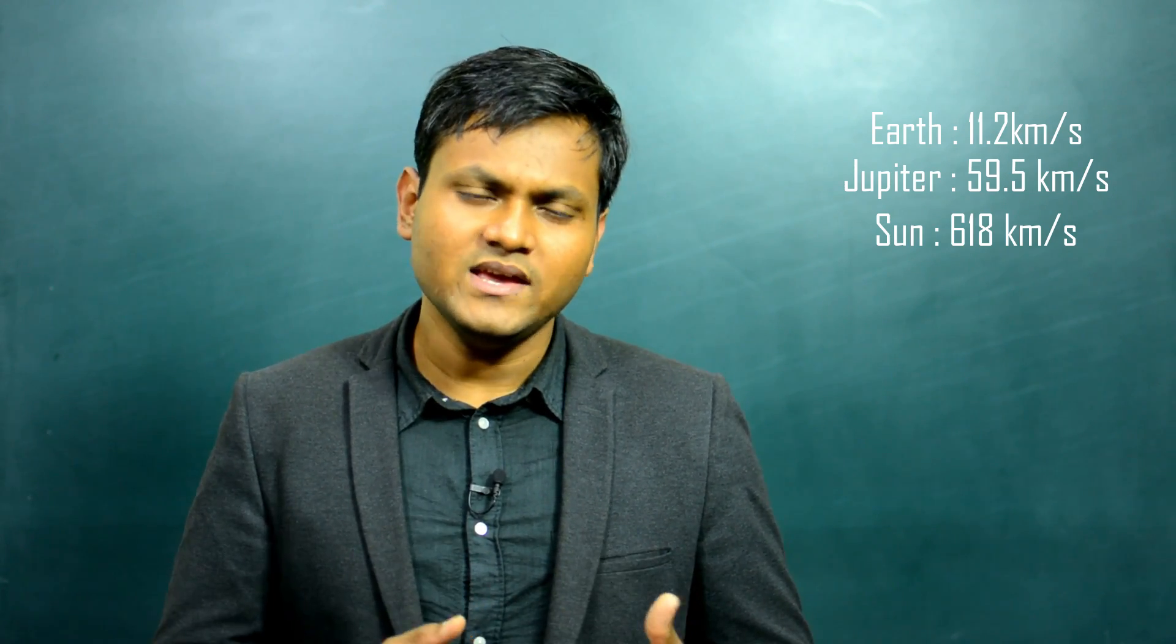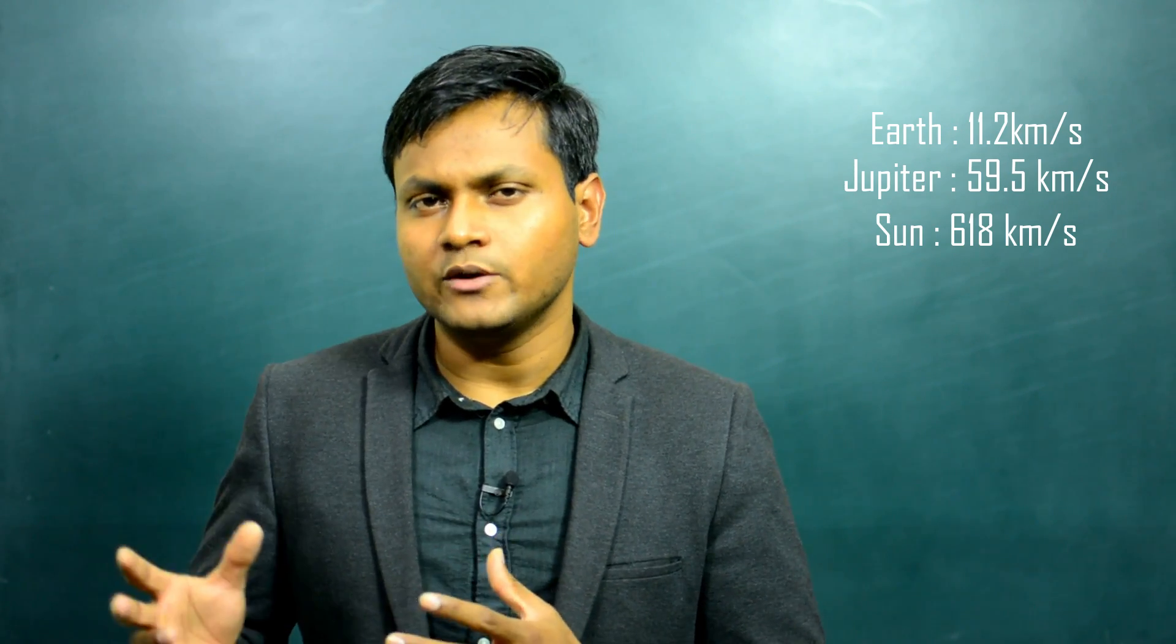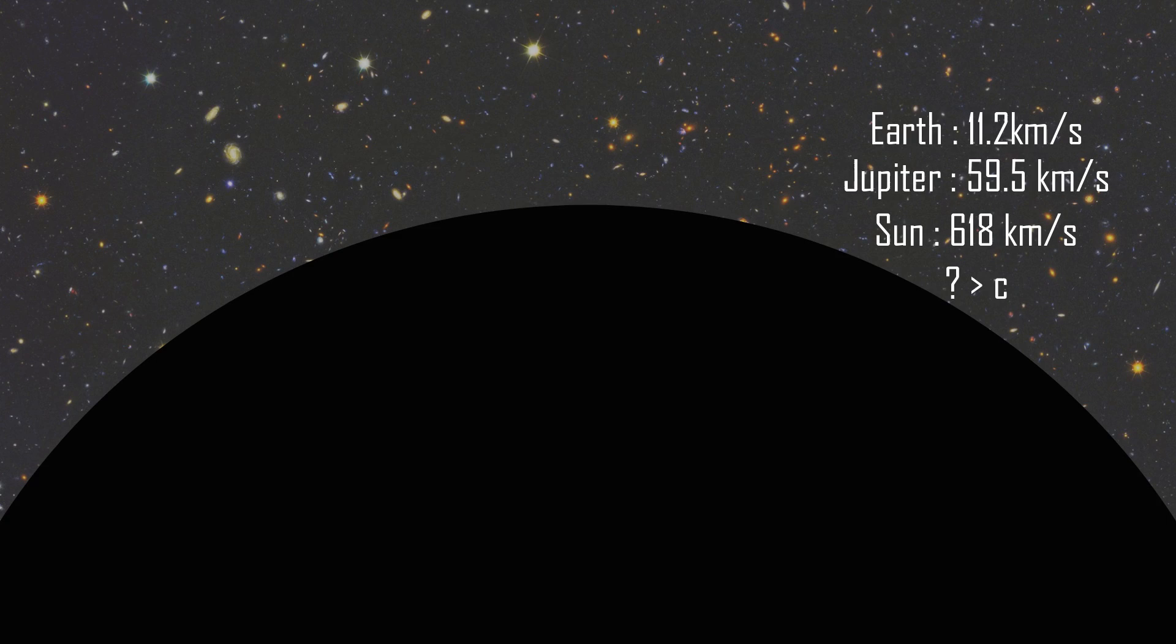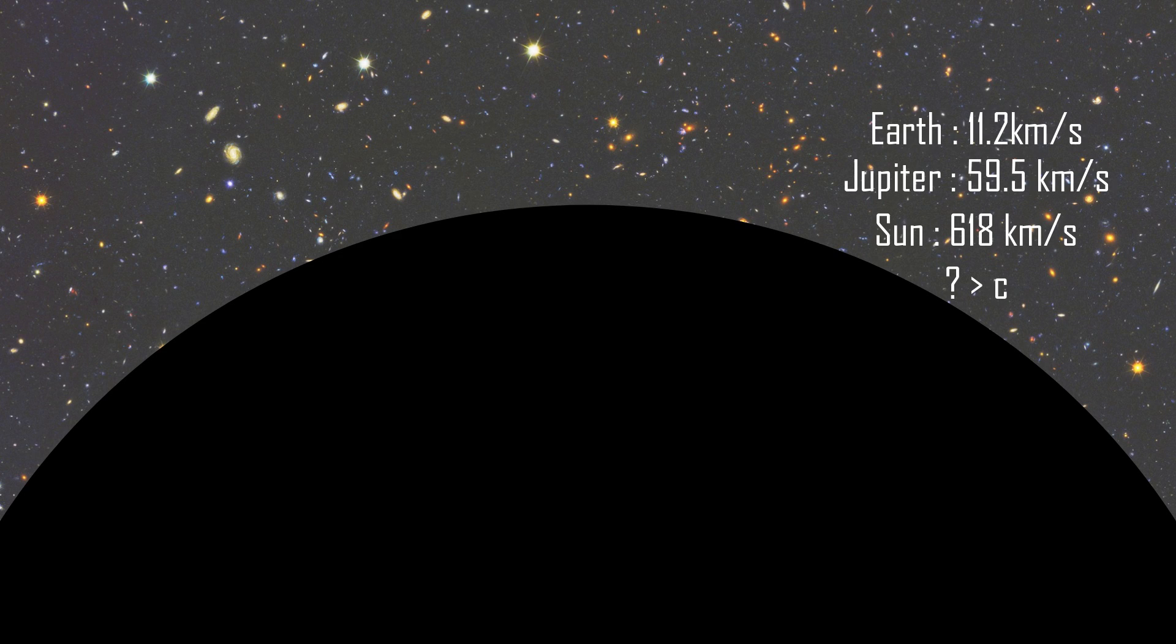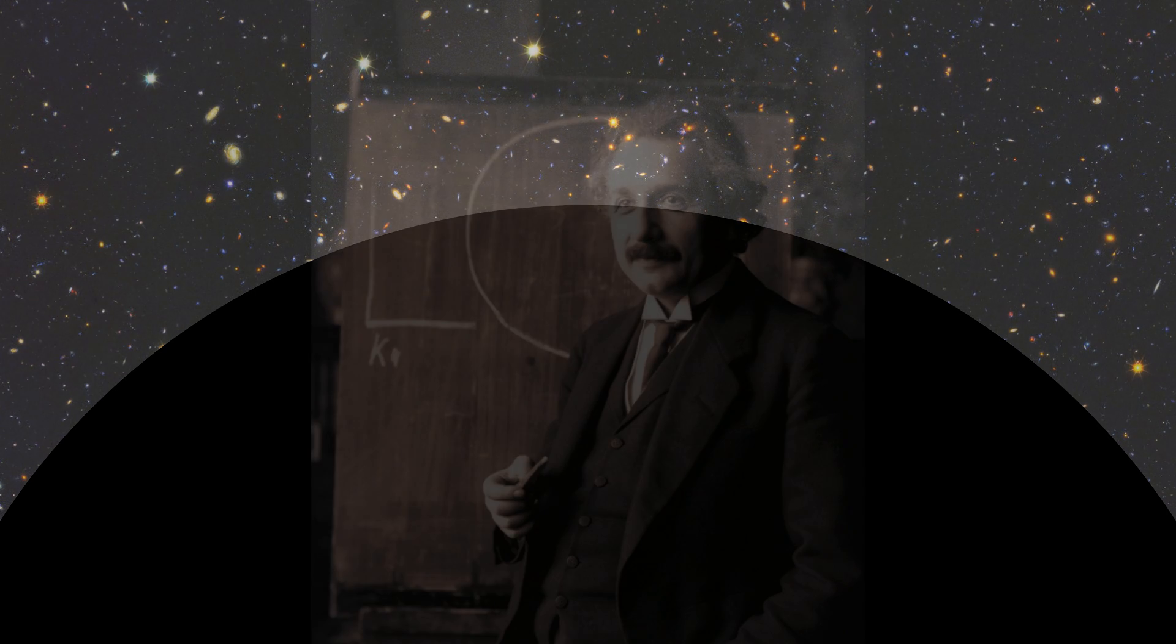Now, in our universe, the highest possible speed is the speed of light. So the natural question would be: is there some kind of an object out there which is so massive and so dense that it has an escape velocity which is greater than the speed of light itself? Is there an object so dense and so massive that not even light can escape its gravitational field? And if a body like that exists, you would not be able to see it because not even light can escape its gravitational pull. It would be completely black.